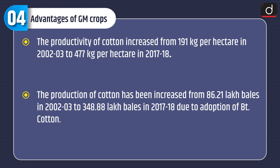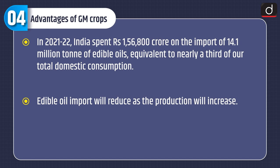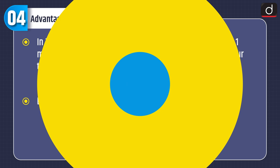The production of cotton increased from 86.21 lakh bales in 2003 to 348.88 lakh bales in 2017–18 due to adoption of Bt cotton. In 2021–22, India spent ₹1,56,800 crore on the import of 14.1 million tonnes of edible oils, equivalent to nearly a third of total domestic consumption. Edible oil imports will reduce as production increases.